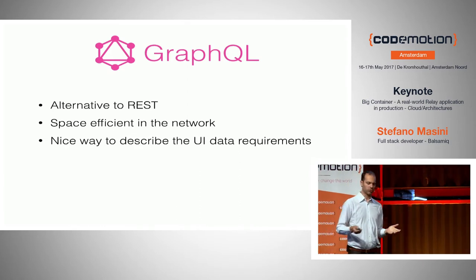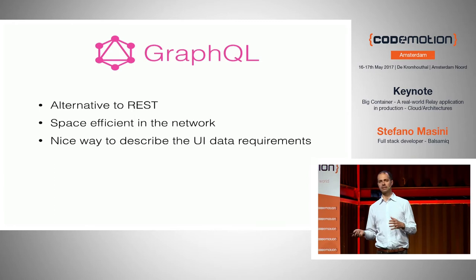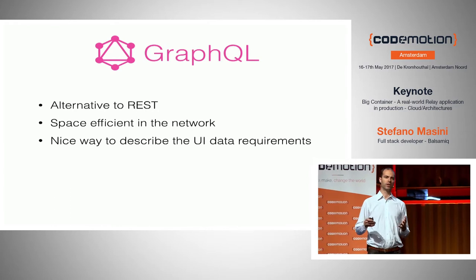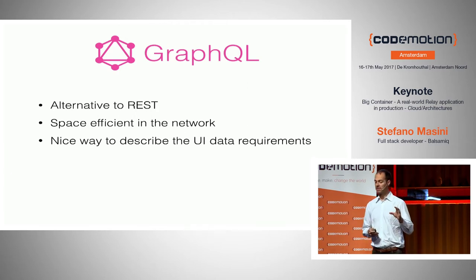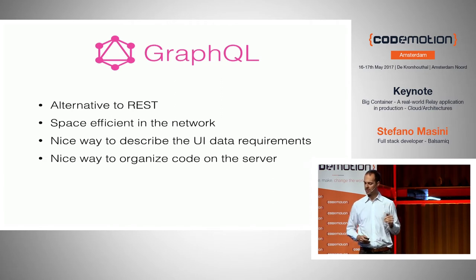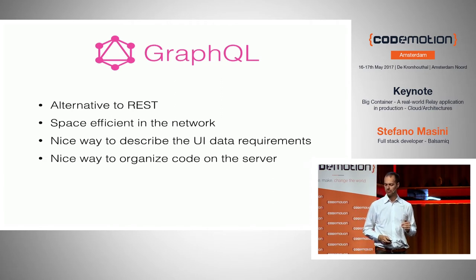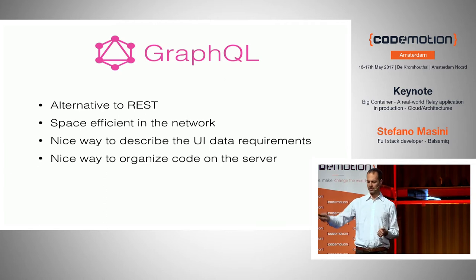It turns out to also be a very nice way to describe the data requirements on the UI. If you use React, but also if you don't, you can find very nice ways to have a close binding between the UI components and the data they require from the server. That's something I really like because normally there's a lot of indirection in the code between what you see and how you get it from the server. It also turns out to be a nice way to organize server code because of the way you implement the GraphQL server — that's called a schema.